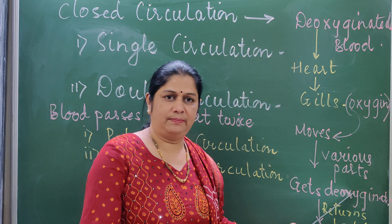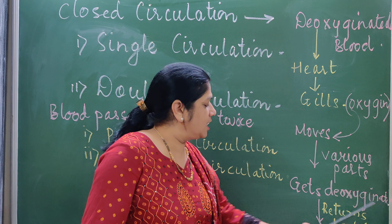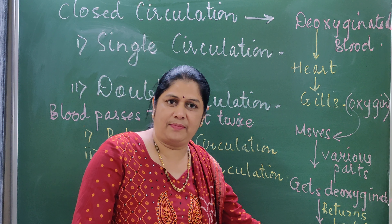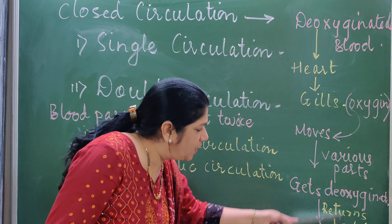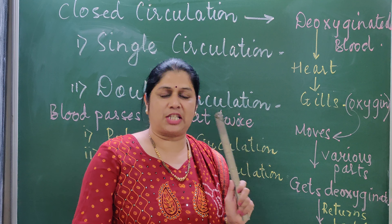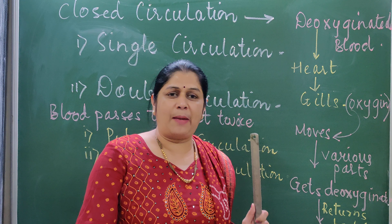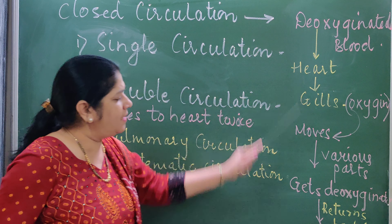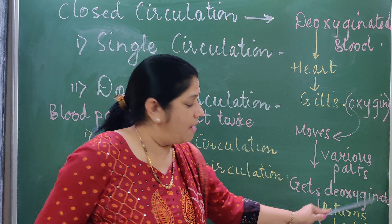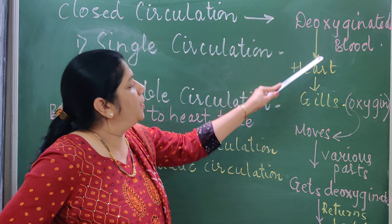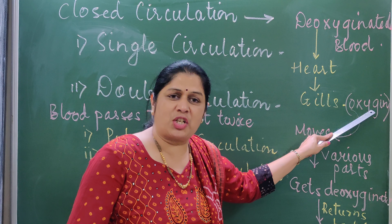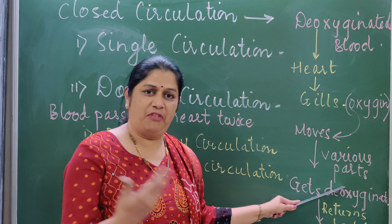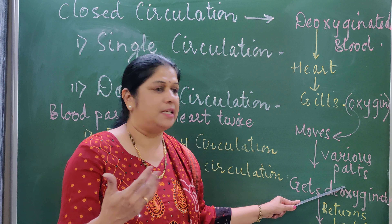In lower vertebrates like fish, the heart is two-chambered with one atrium and one ventricle. The circulatory system circulates the blood as venous blood. The blood circulated in fish is deoxygenated blood. When the stream of blood flows only once, it is referred to as single circulation.